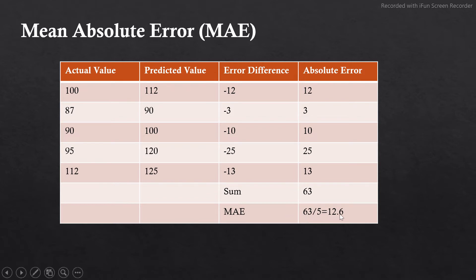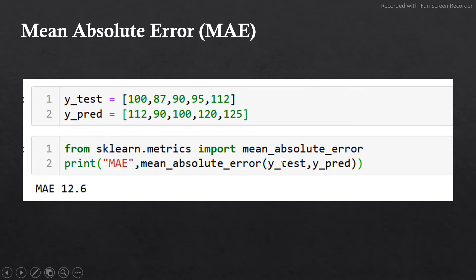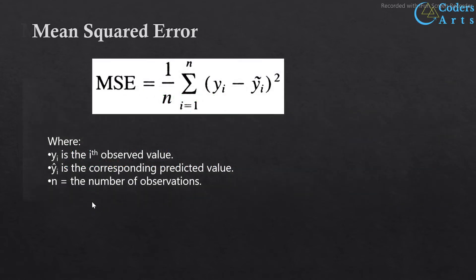Here we calculate the mean absolute error using Python code. I have actual data and predicted data in list format. I first import the library, then find the mean absolute error. You can see the mean absolute error is the same as we calculated manually in the previous slide — that is 12.6.